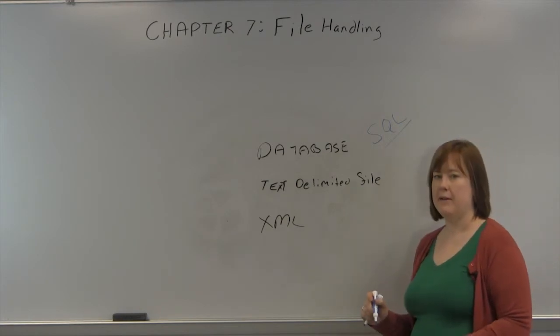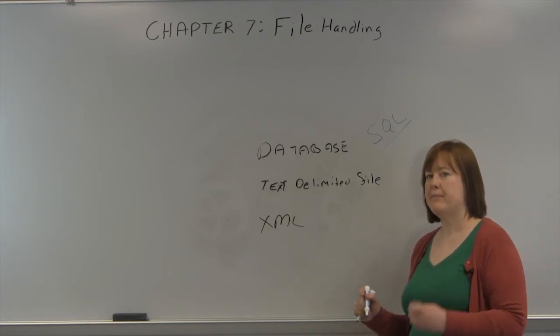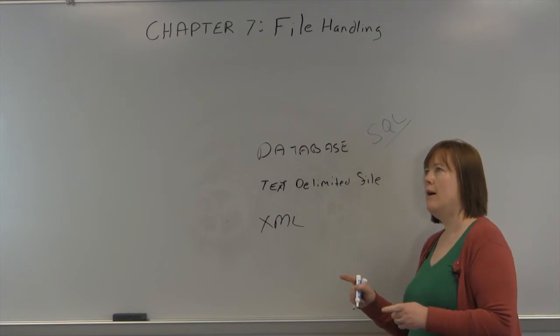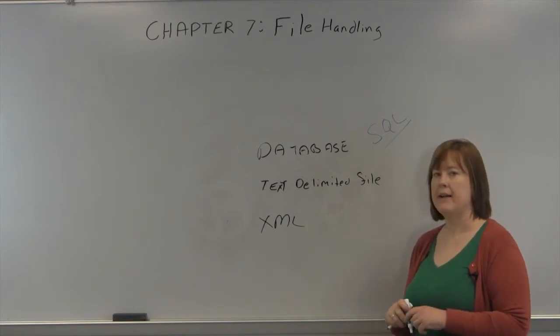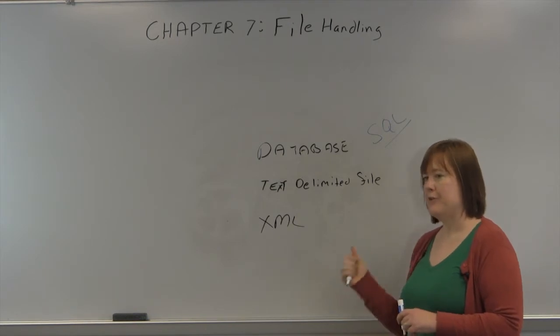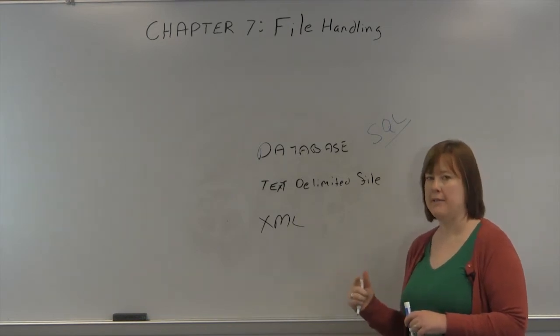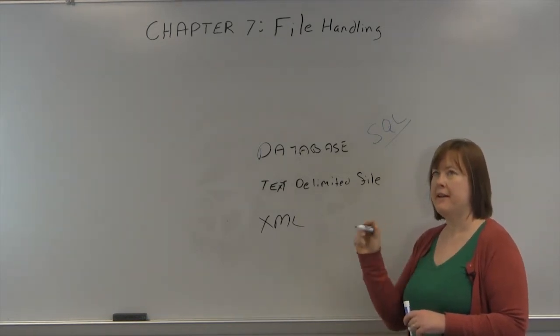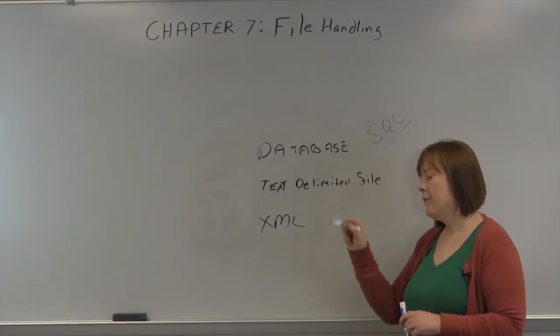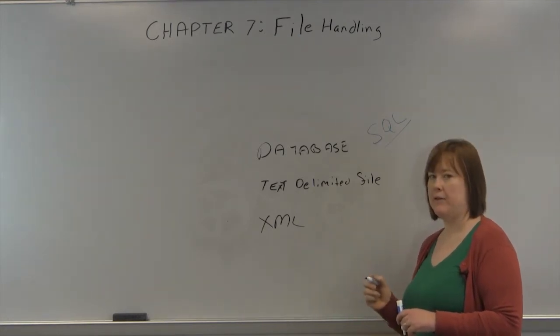A text-delimited file. What that does is instead of specifying how long a field is going to be, it separates it with a delimiter. And they're usually either tab or comma delimited, where you'll get a CSV comma-separated values, where you'll have commas between each field, or a tab between each field.